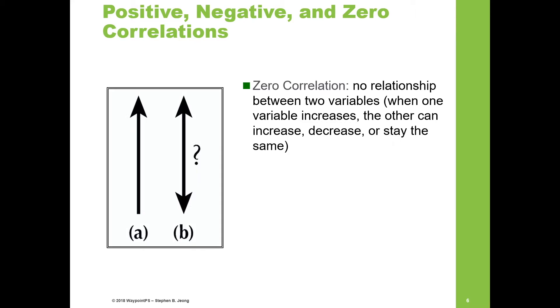Finally, we have zero correlation, where as variable A goes up or down, nothing happens to variable B. A couple of examples: hair color and intelligence. Hair color has nothing to do with intelligence, meaning that we can't predict a person's level of intelligence based on their hair color. There are other predictors of intelligence, but not hair color.